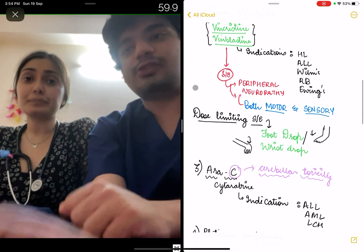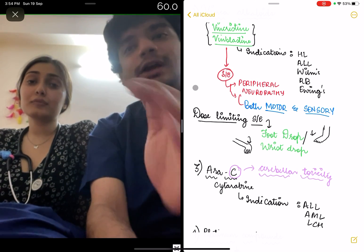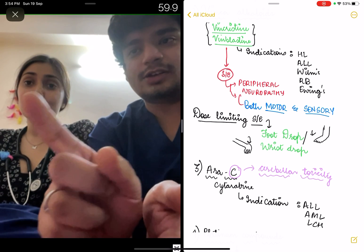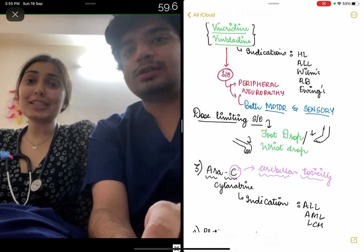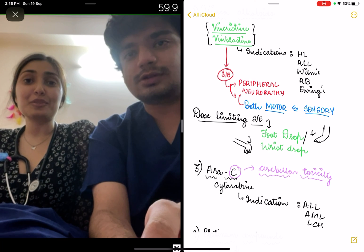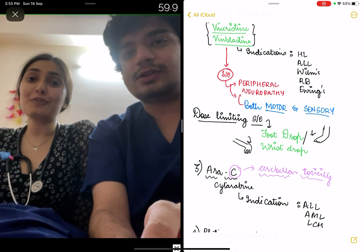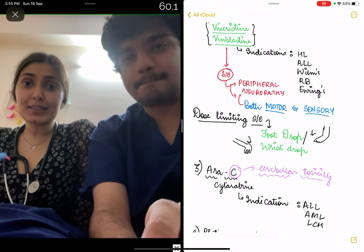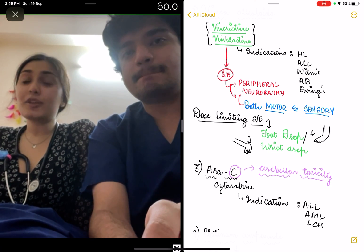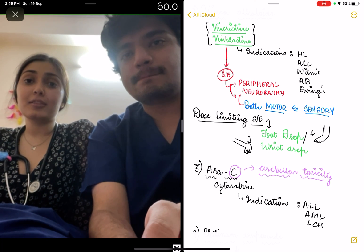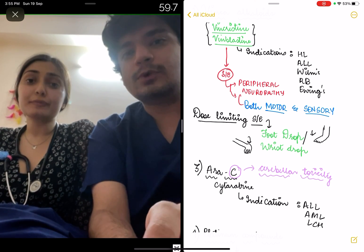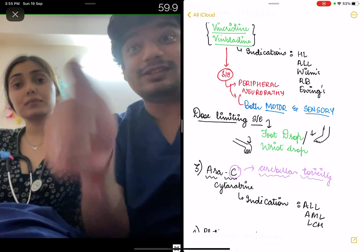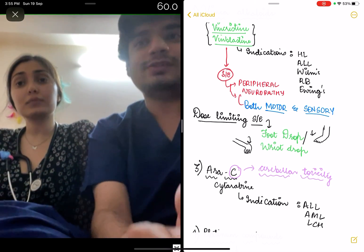Next comes Ara-C — cytosine arabinoside — given again for leukemias and lymphomas. The main side effect has a mnemonic given in the video: C for cytarabine, C for cerebellar toxicity. So any child with ataxia or cerebellar signs — ataxia, vertigo, diplopia, child is swaying around — this suggests cerebellar toxicity. Look whether the child has received Ara-C.